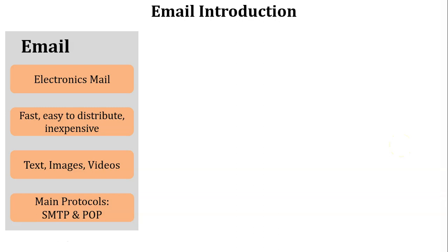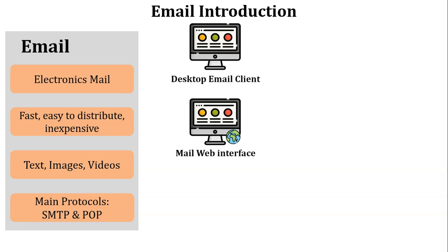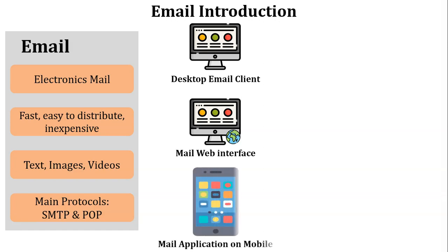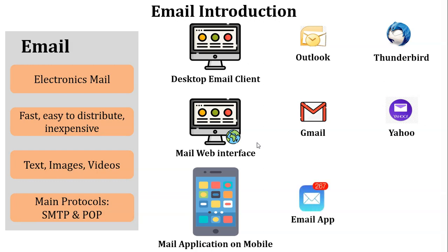There are three interfaces to access mail from a web server and send mail to other users. The first is the desktop email client. The second is the mail web interface. The third is the mail application on mobile. Examples of desktop email clients are Outlook and Mozilla Thunderbird. Examples of mail web interfaces are Gmail, Yahoo, Rediffmail, Hotmail, and many more. There are also many mobile applications available to send and access mail from the mail server.